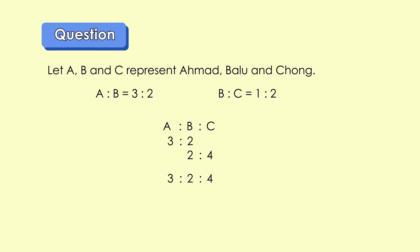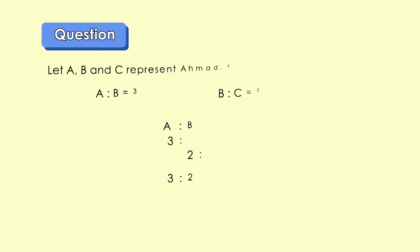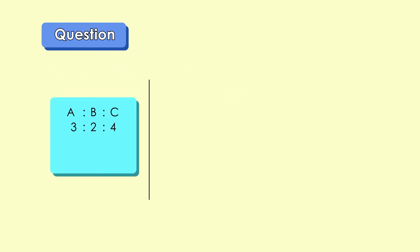Upon changing the value of B in both ratios to the same number, we can now rewrite the ratio of the three parts with the new values. A to B to C — you will get three to two to four. Once we get the ratios between the three unknowns, we can now proceed with the calculation. The total portions in the ratio is three plus two plus four, which equals nine. The sweets received by Ahmad are three parts from a total of nine parts, which can be written as three over nine.